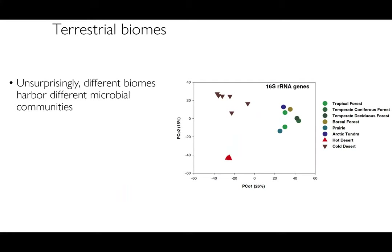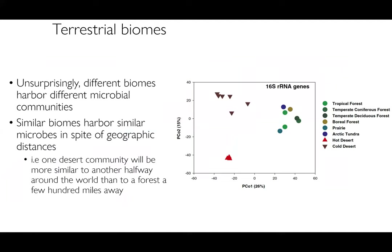Unsurprisingly, and I think this is pretty intuitive from what we know about microbes, these different biomes have very different microbial communities. This is a principal coordinates analysis — the closer two points are on this graph, the more similar the microbial communities. These are colored by different habitats, and this graph is generated by looking at the 16S ribosomal RNA genes, which every bacterium has and which we use as a way to identify and catalog microbial communities in different locations.